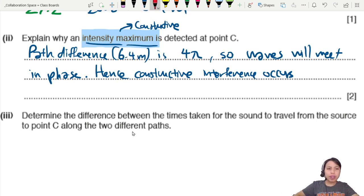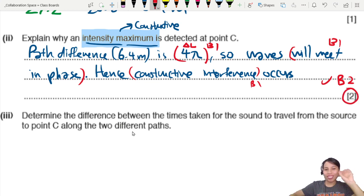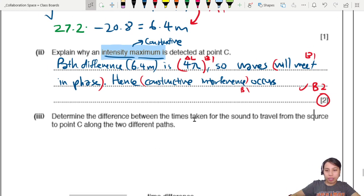Hence, constructive interference occurs. And constructive refers back to intensity maximum. So there's two marks here. There's quite a few points you could talk about. All you need is two. The first one, if you mention 4 lambda path difference, that's one mark already. If you talk about meeting in phase, what does 4 lambda mean? Waves will meet in phase. That's another one. And you talk about constructive interference, I mentioned that could be another one. But maximum you can get is 2.